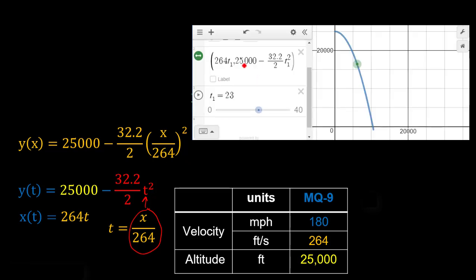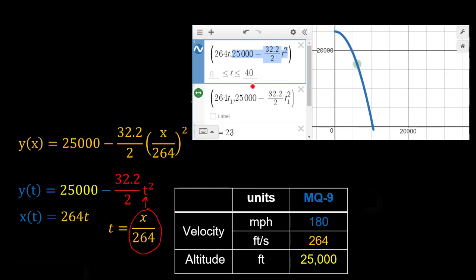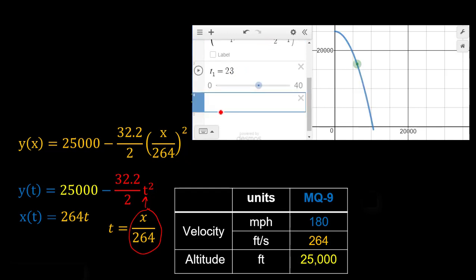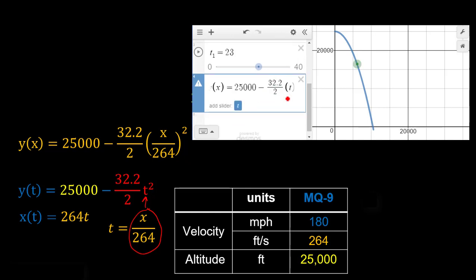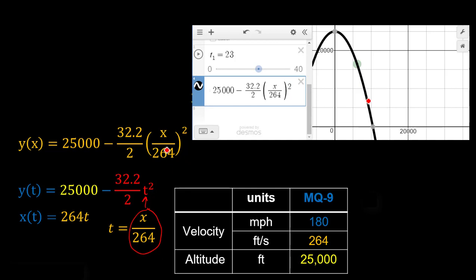And going back to Desmos, you can see we can actually plot that out, too. So I'm going to just take the same thing here. This is my Y value. And I'll just say Y of X is equal to that. But instead of T here, let's put X over 264. And you can see when I do that, I get this overlapping function in the black here. See it overlaps it perfectly.